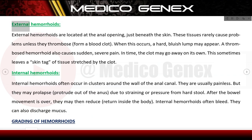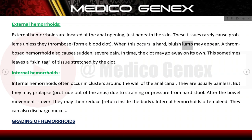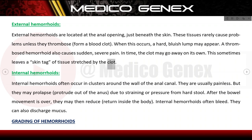External haemorrhoids are located at the anal opening, just beneath the skin. These tissues rarely cause problems unless they thrombose, meaning they form a blood clot. When this occurs, a hard bluish lump may appear. A thrombosed haemorrhoid also causes sudden severe pain. In time, the clot may go away on its own, sometimes leaving a skin tag of tissue stretched by the clot.